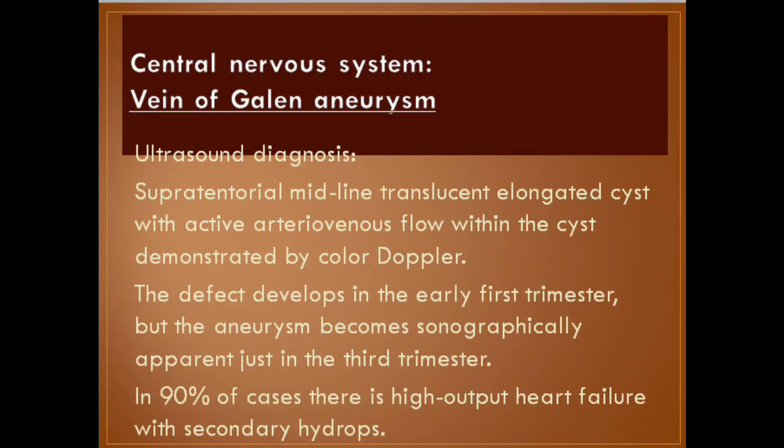Vein of Galen aneurysm — ultrasound diagnosis: supratentorial midline translucent elongated cyst with active arteriovenous flow within the cyst, demonstrated by color Doppler. The defect develops in the early first trimester, but the aneurysm becomes sonographically apparent in the third trimester. In 9% of cases, there is high-output heart failure with secondary hydrops.